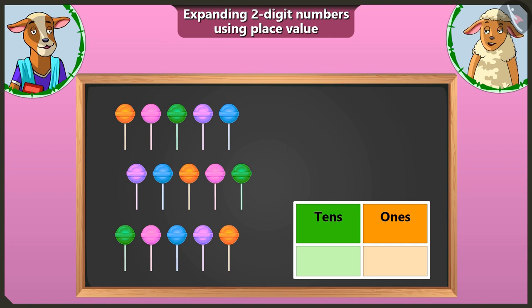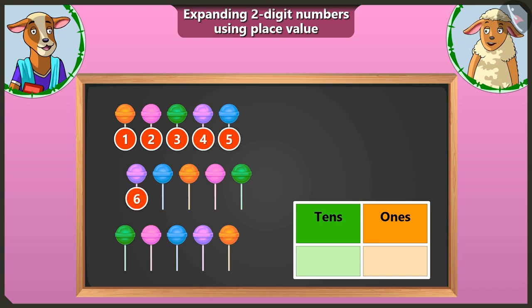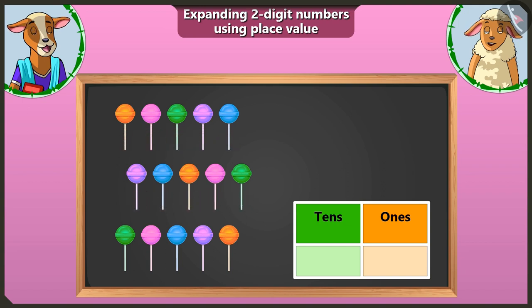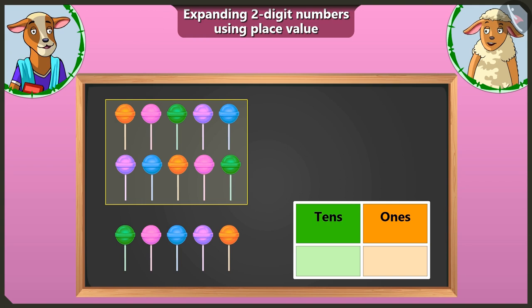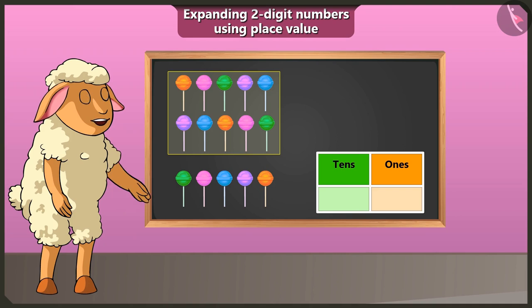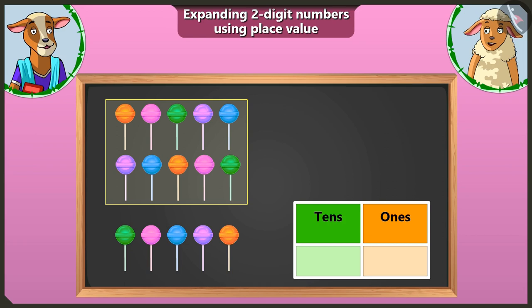Here is a lollipop. Let us make a bundle of ten of these. Counting 1 through 10, we make a group of ten lollipops. How many groups of tens do we have? We have one group of ten lollipops. That is why we will write one in the box of tens.